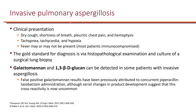Fever may or may not be present because typically patients who get this are already immunocompromised, so they may not be able to mount a fever response. The gold standard for diagnosis is histopathology examination and culture of a surgical lung biopsy. We do have a couple of assays — galactomannan and beta-D-glucan — that can be detected in some patients with invasive aspergillosis. However, they're not very specific and could be positive due to other fungal infections, but they can be used to monitor if the patient is responding to antifungal therapy.